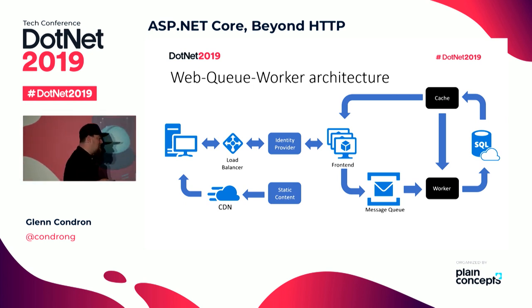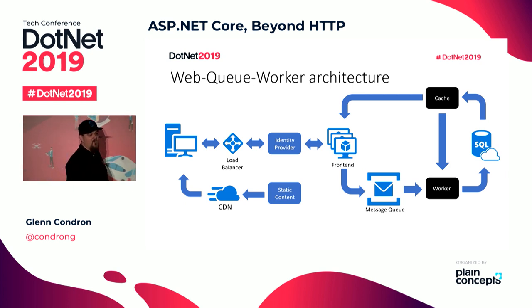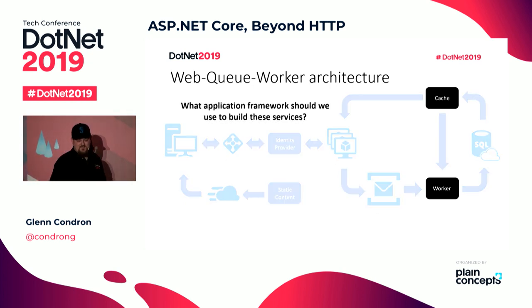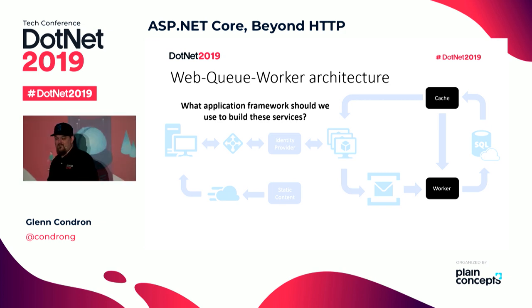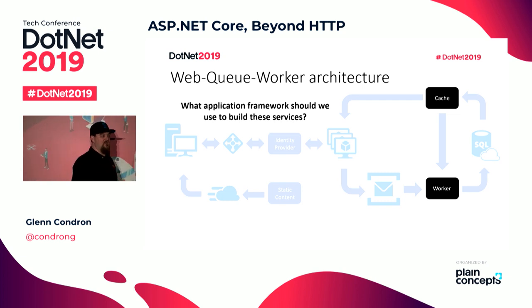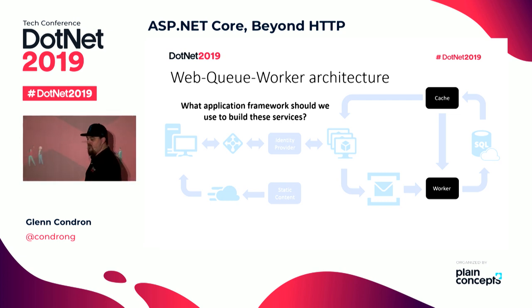As the .NET team, we started to look at diagrams like this — because people would come to us and say this is what we're building, or they would say we need to build something like this, because web scale has to be like this. And we said, well, I don't know if we really have anything for these black bits. What is the template that you go File New in Visual Studio to make that background worker — that thing that takes the message off the message queue and updates the database? What is the .NET way of doing that?